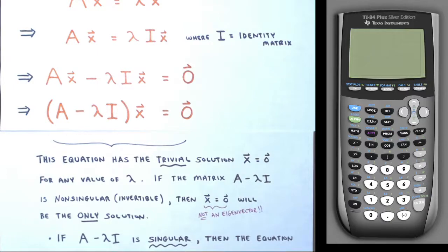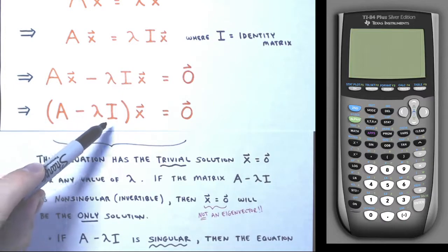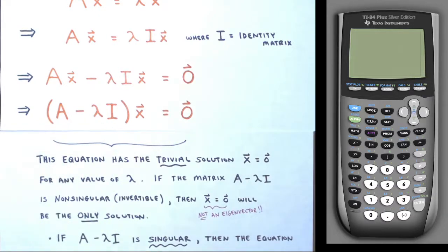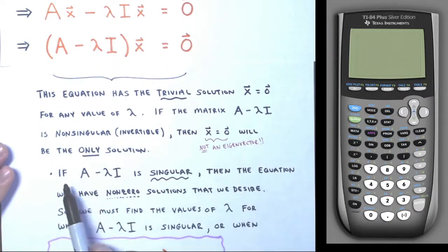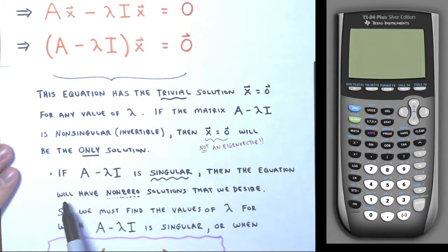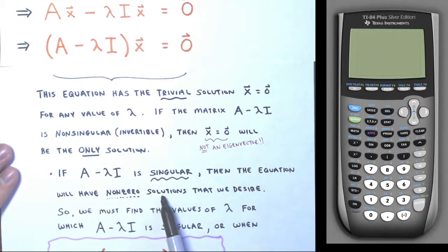So we need to find when A − λI does NOT have an inverse — when it is singular. If A − λI is singular (not invertible), then the equation (A − λI)x = 0 will have non-zero solutions we can consider eigenvectors of A. So we must find the values of lambda for which A − λI is singular.